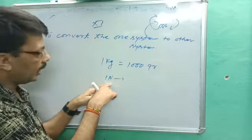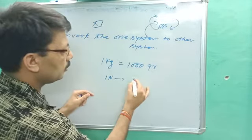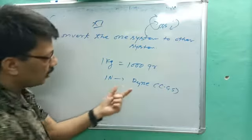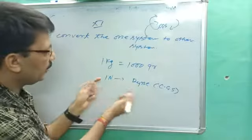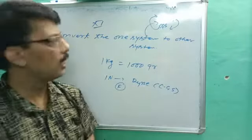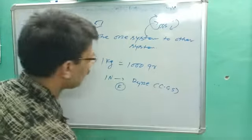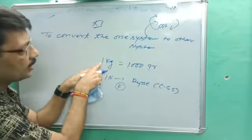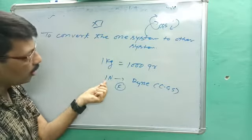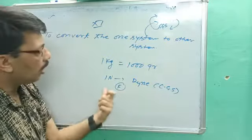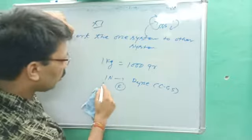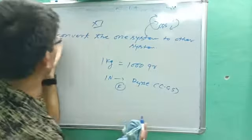Newton is the SI unit of force. When converting 1 newton into the CGS system — which is dyne — we don't directly know how much dyne corresponds to 1 newton. In that case, we have to take help from the dimensional formula. So we are going to convert from the MKS system into the CGS system using the dimensional formula approach.